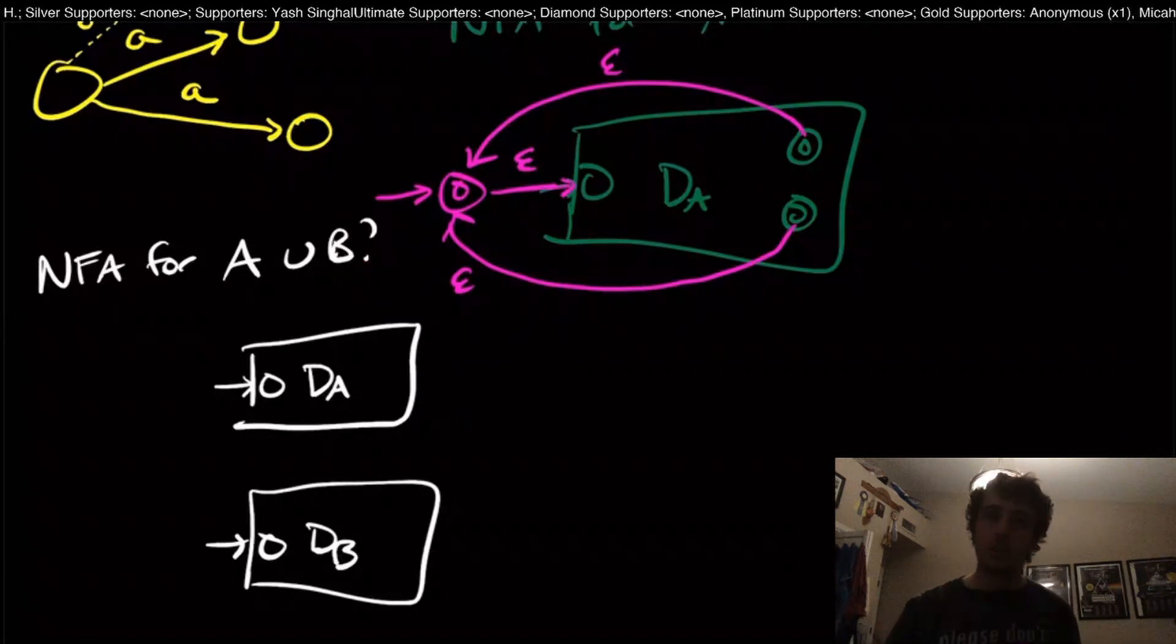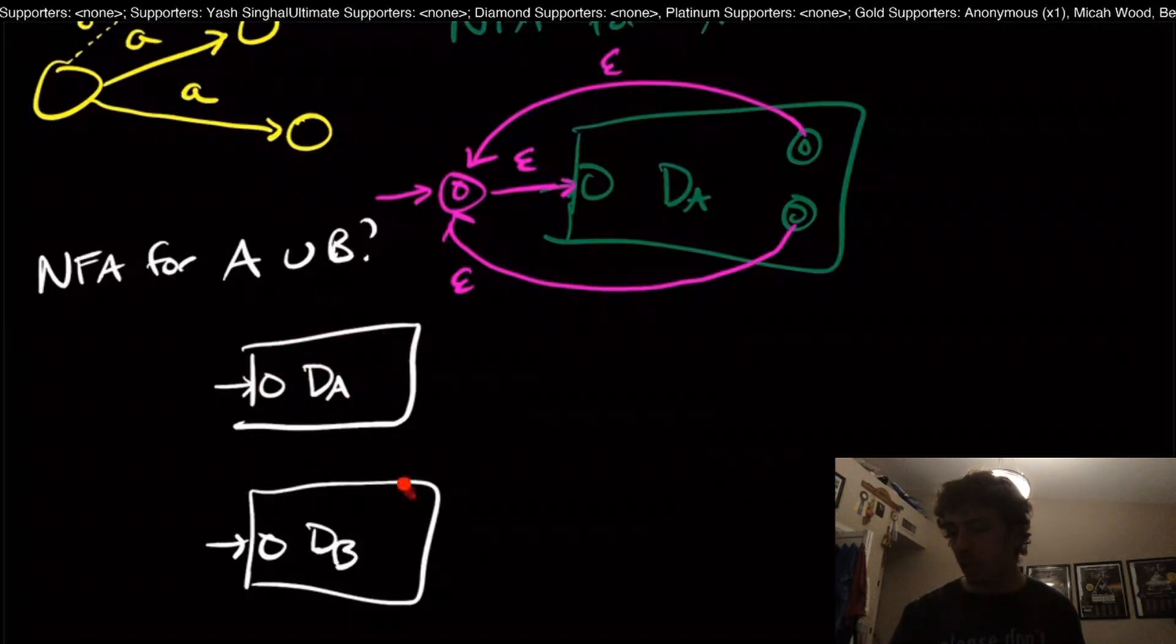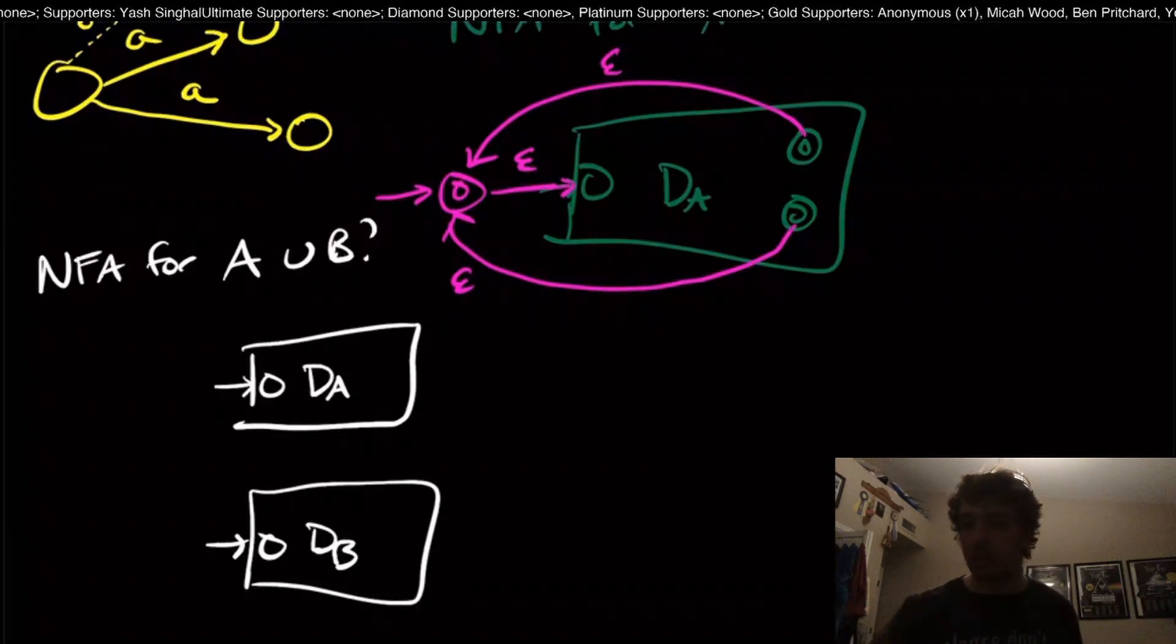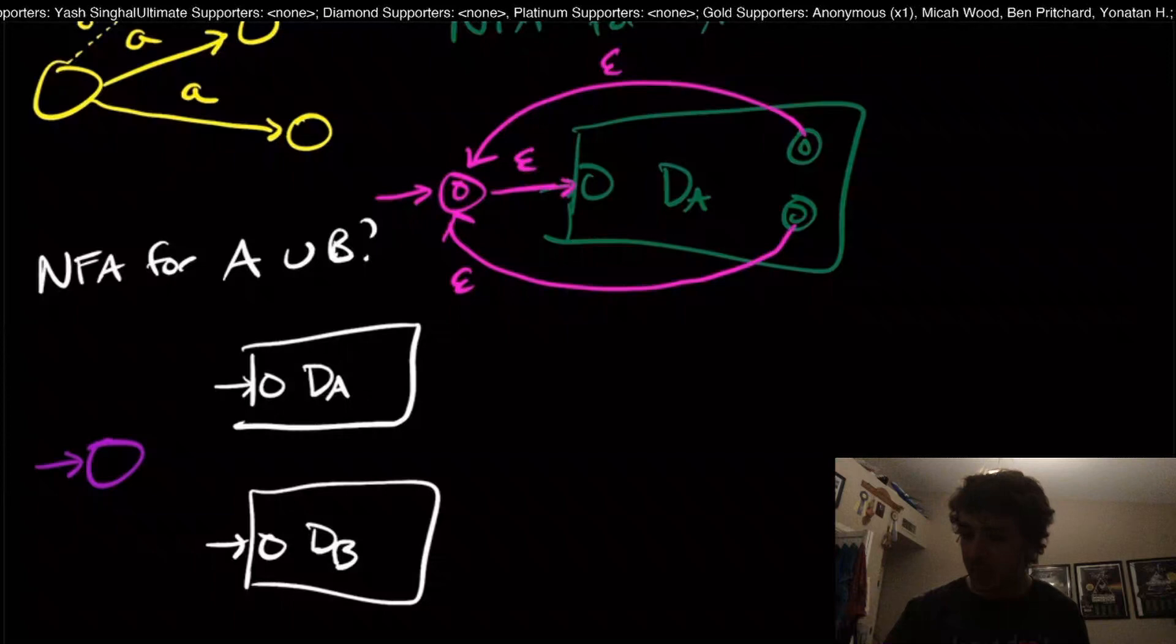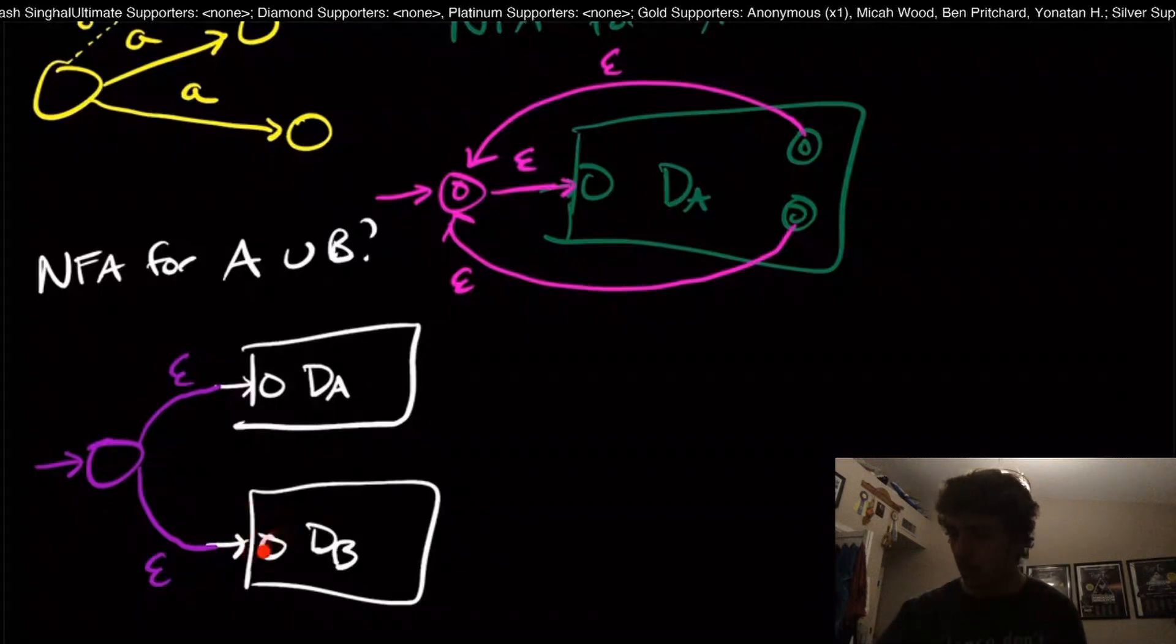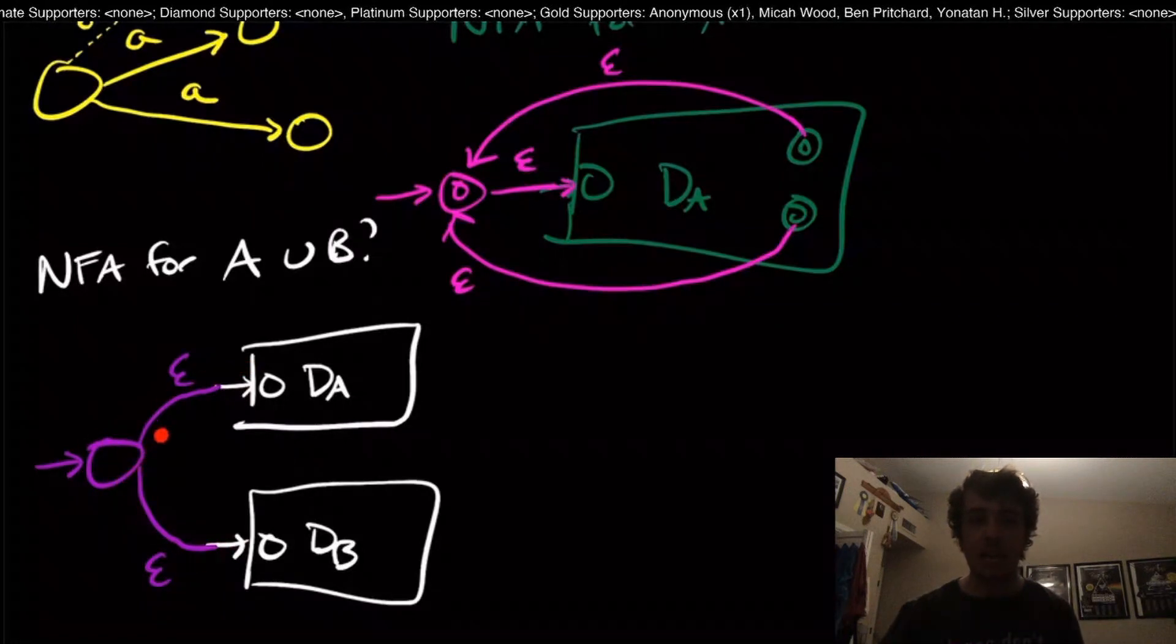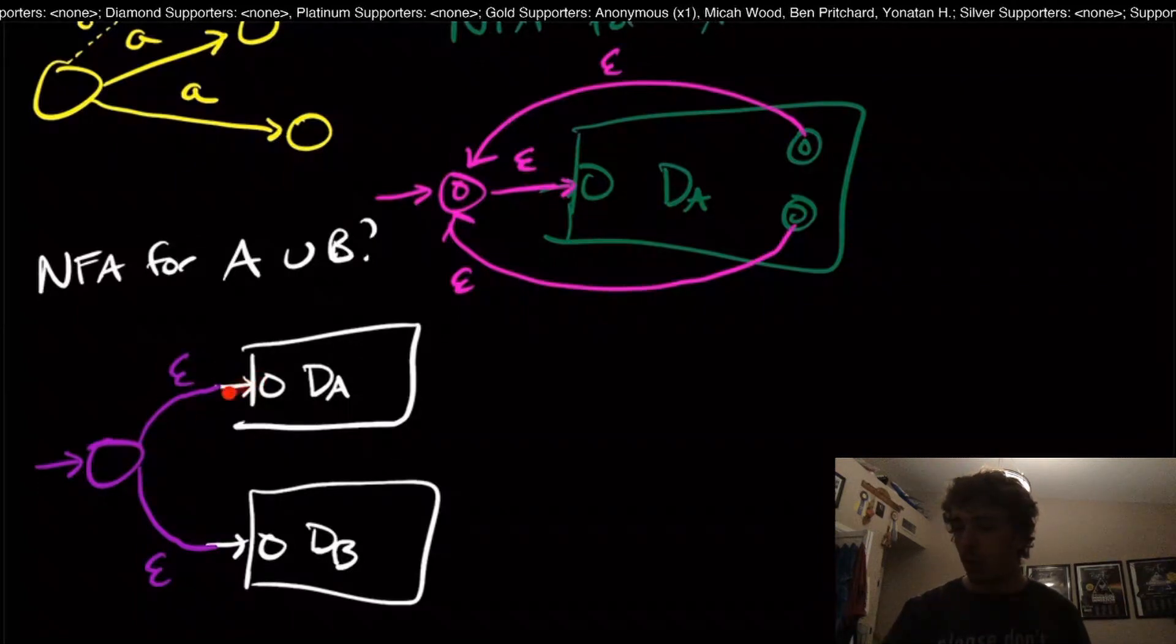What we can do is note that in order to accept something in the union, we either accept something in A or in B. If I had a choice as to what to do, either go through the DA machine or the DB machine, then that's great. DFAs didn't have any choice whatsoever. What we can do with an NFA is we can make a start state here and an epsilon transition over to the original start states of these machines.